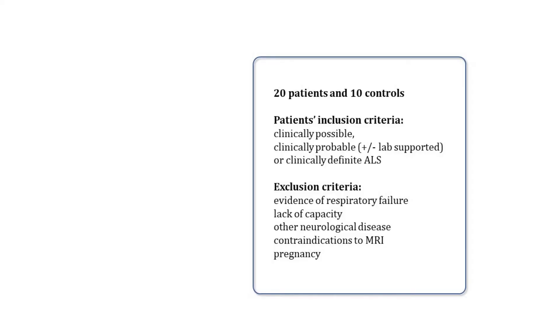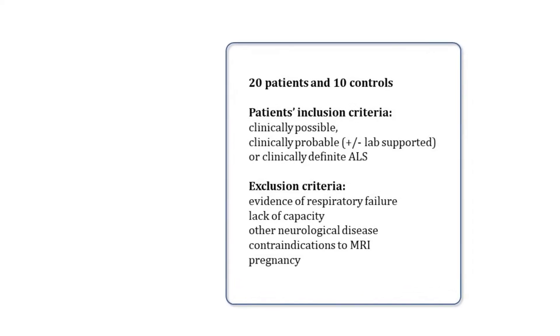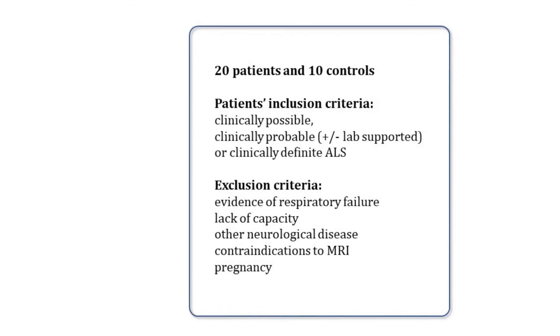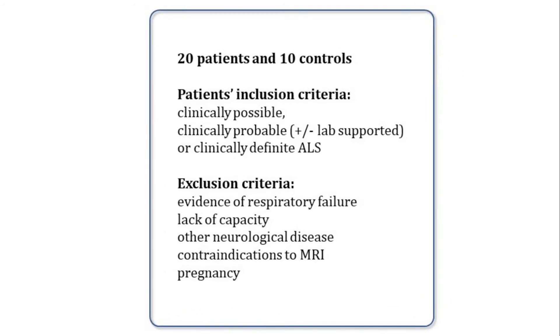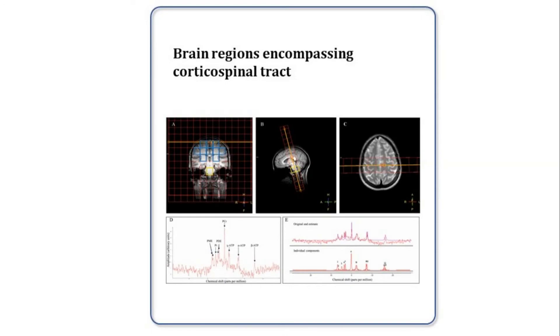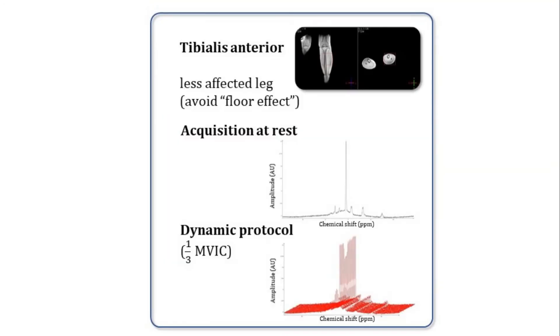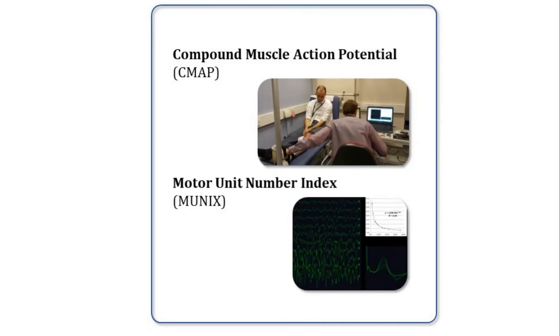We recruited 20 patients living with amyotrophic lateral sclerosis and 10 age- and gender-matched healthy controls. We acquired phosphorous spectra from both motor regions of the brain and skeletal muscles, and we collected clinical data and neurophysiological parameters so that we could assess relevant correlates.